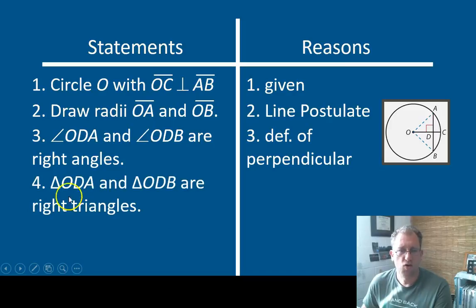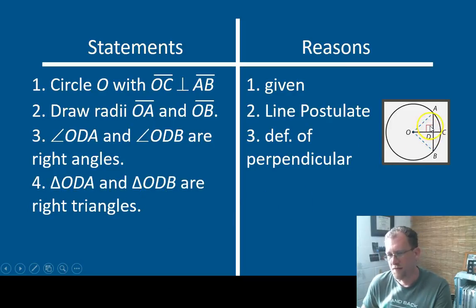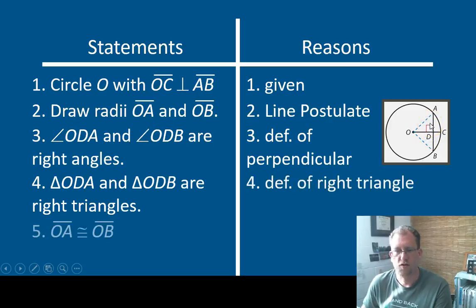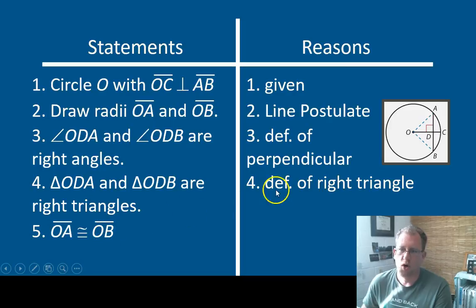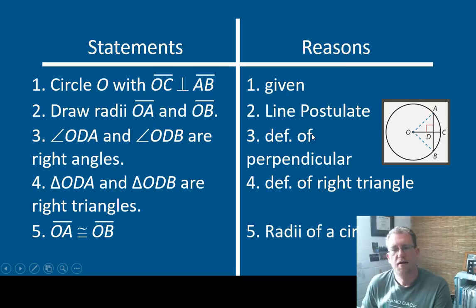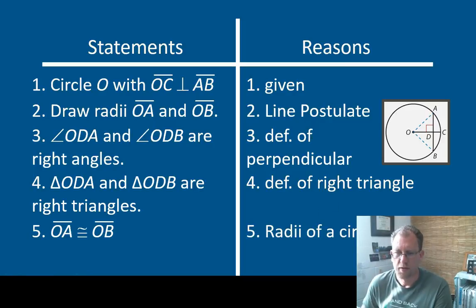Triangles ODA and ODB are right triangles — by definition, if they have right angles in them, then they're right triangles. OA is congruent to OB — that's just because they're both radii, and all radii of a circle are congruent.